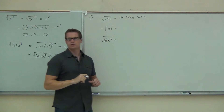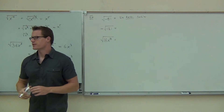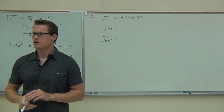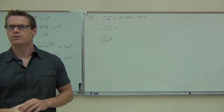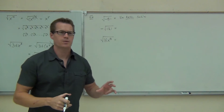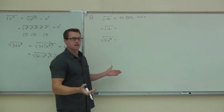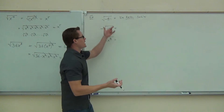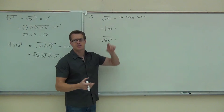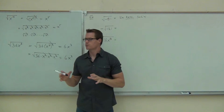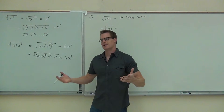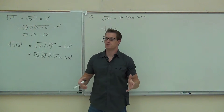Why no real solution? What's the matter there? We know that a number times itself cannot give us a negative. So if the radicand is negative inside of a square root, we can't do it — not in the real numbers, at least.